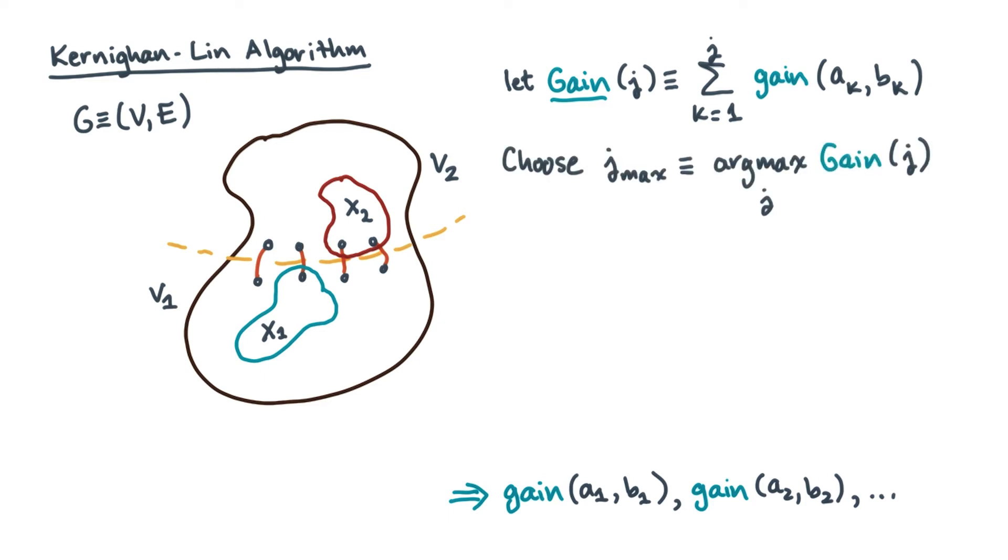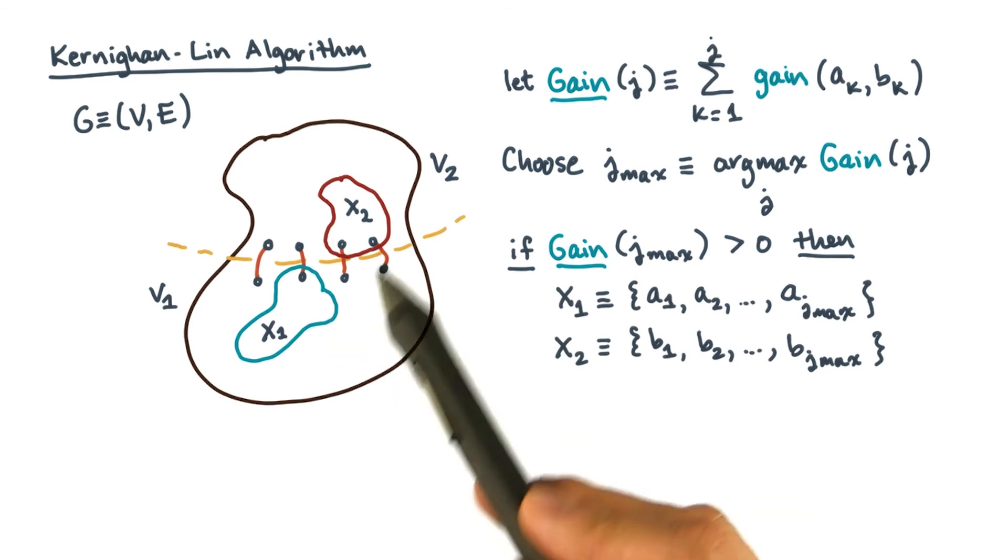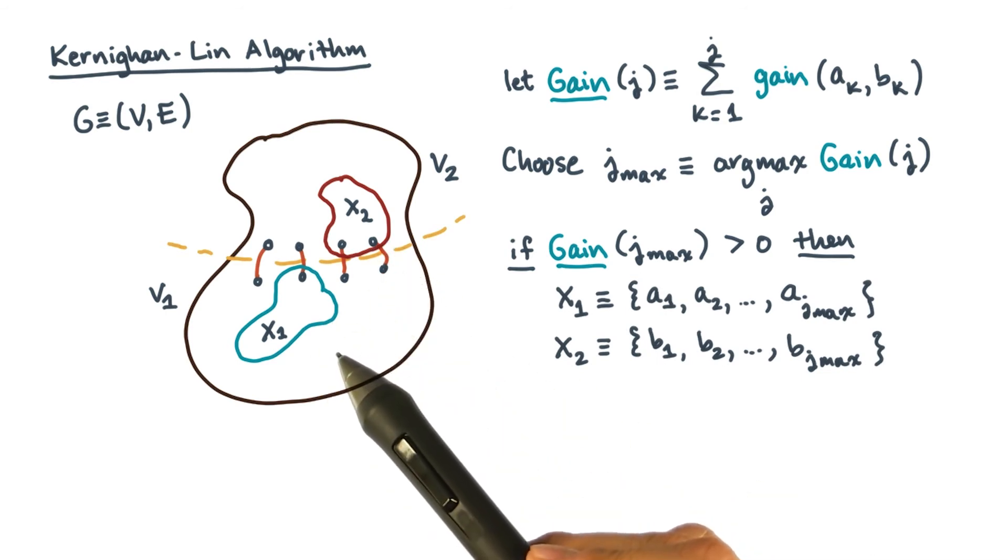If this cumulative gain is nonzero, then you have a candidate x1 and x2 subsets that actually improve the partition. You can then swap these two subsets and update the overall cost.